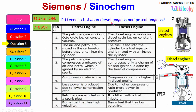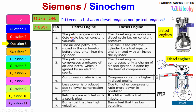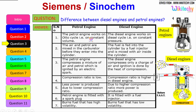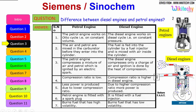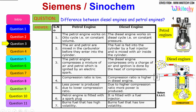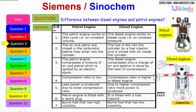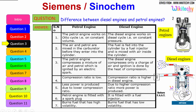Let us see the difference between the diesel engine and the petrol engine. The petrol engine works on the Otto cycle, therefore on constant volume, whereas the diesel engine works on the diesel cycle at constant pressure. In a petrol engine, air and petrol are mixed in the carburetor before they enter the cylinder, whereas in a diesel engine, the fuel is fed into the cylinder by a fuel injector and mixed with air inside the cylinder.